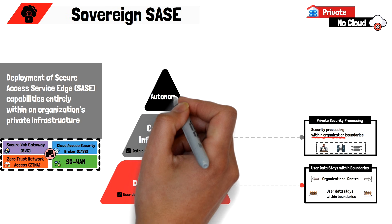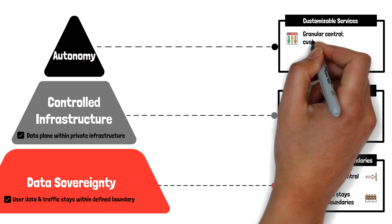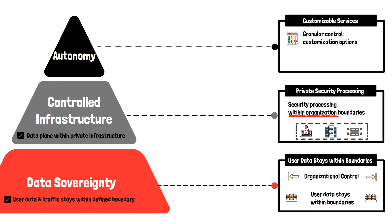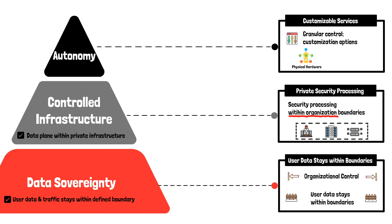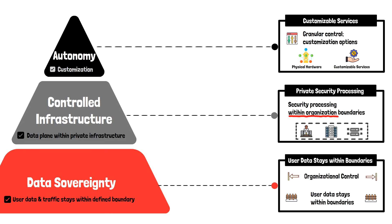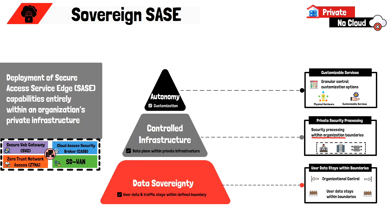The third pillar of the Sovereign SASE model is service autonomy — the principle that organizations should maintain granular control over the security services they deliver to their users, with minimal reliance on external or third-party dependencies. This means having control over things like physical architecture and being able to select the level of redundancy suitable for their use case. For example, if a device fails, should traffic stay in a data center or fail over to the next available POP location? Some organizations may also decide that SSL VPN is outdated and IPSec should be used for all user connections.